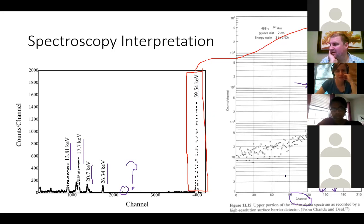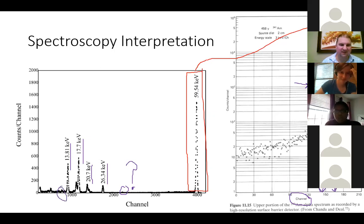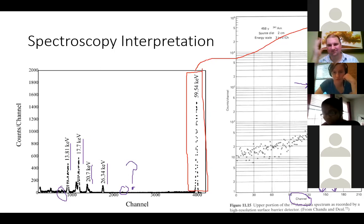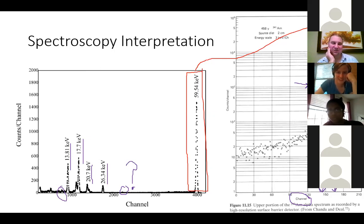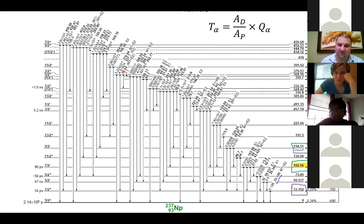The energy deposited at the Compton edge would be 59.5 minus 48.26, which is about 11.24 keV — there might be a small feature there. The 13.8, 17.7, 20.7, and 26.34 keV peaks we see in the spectrum don't appear to correspond to anything obvious in our energy level diagram. To be certain, you'd want to look at all the bold transition energies associated with every little transition on the diagram.